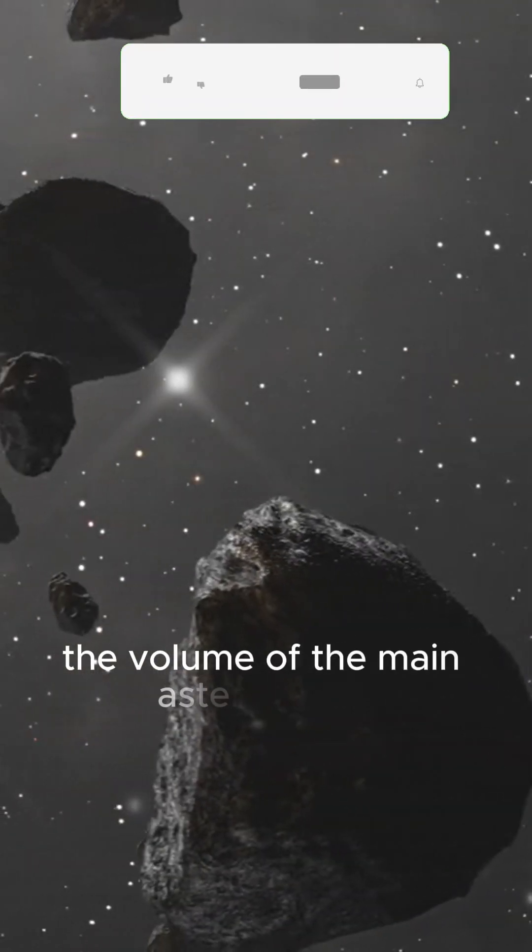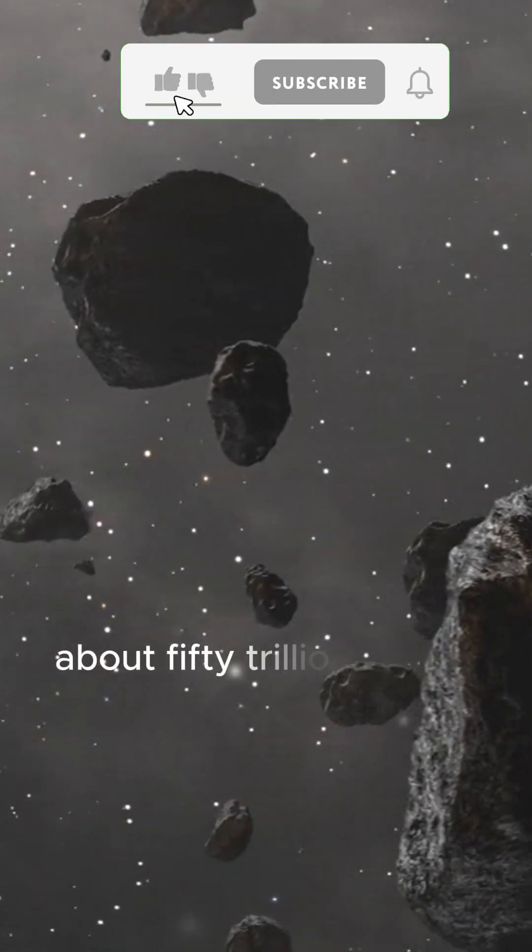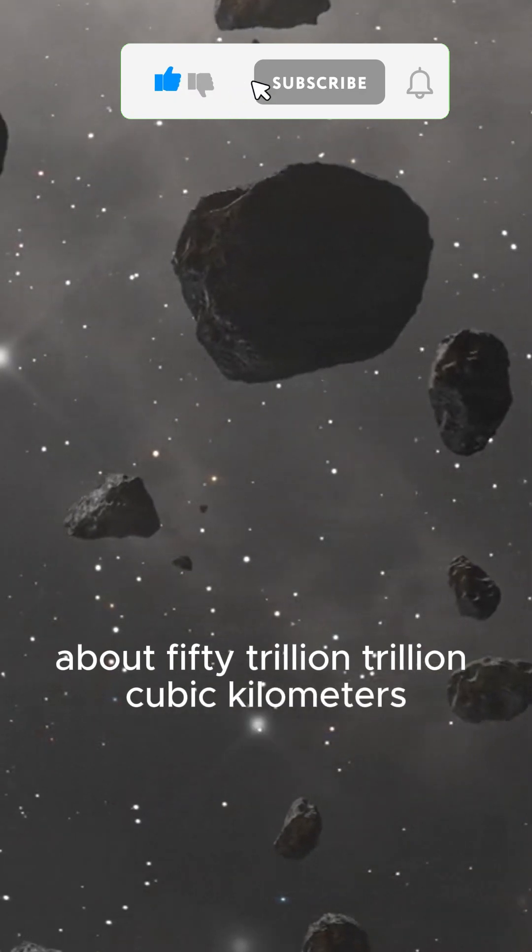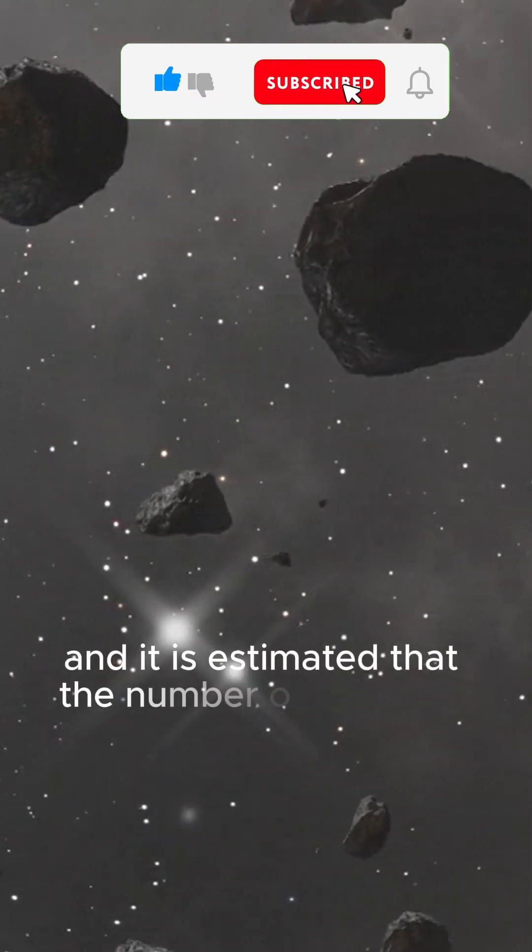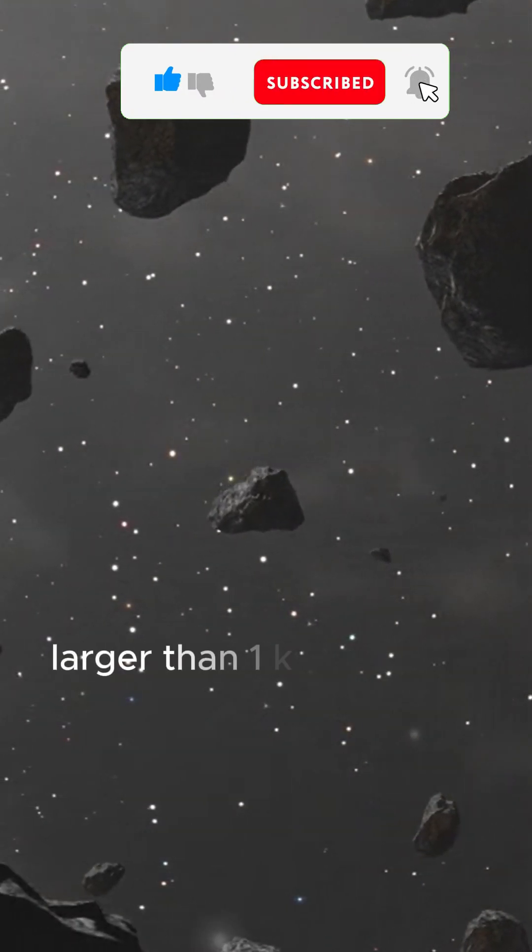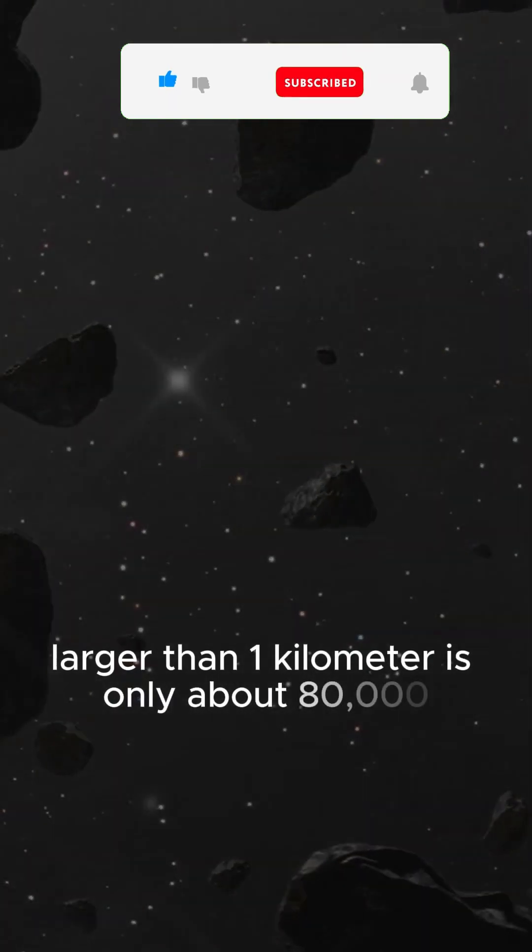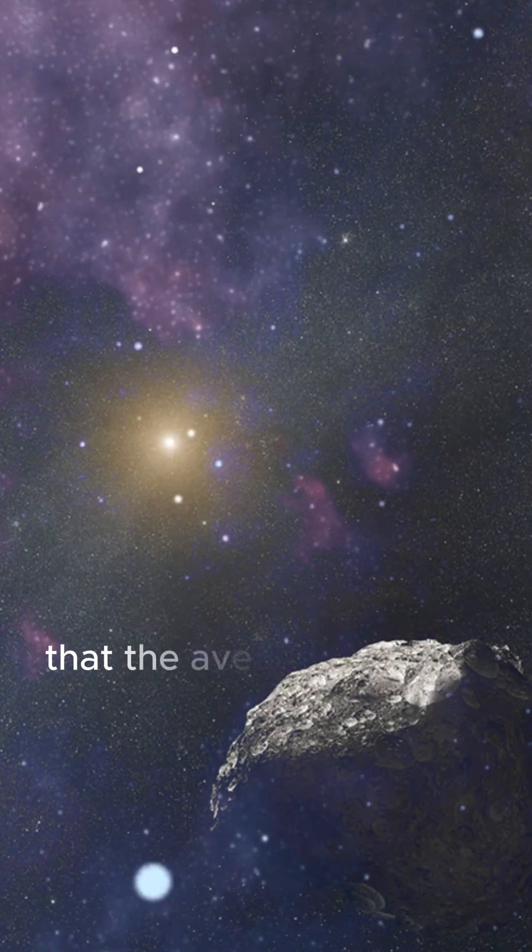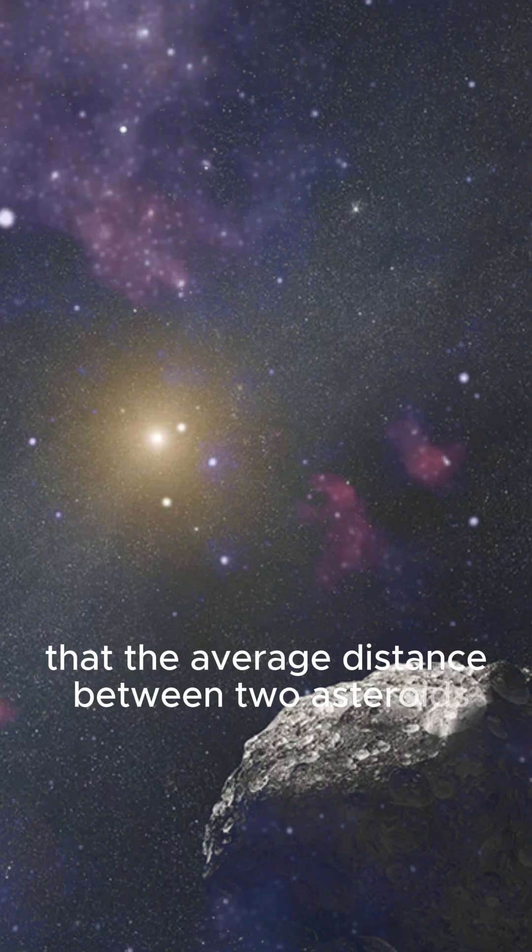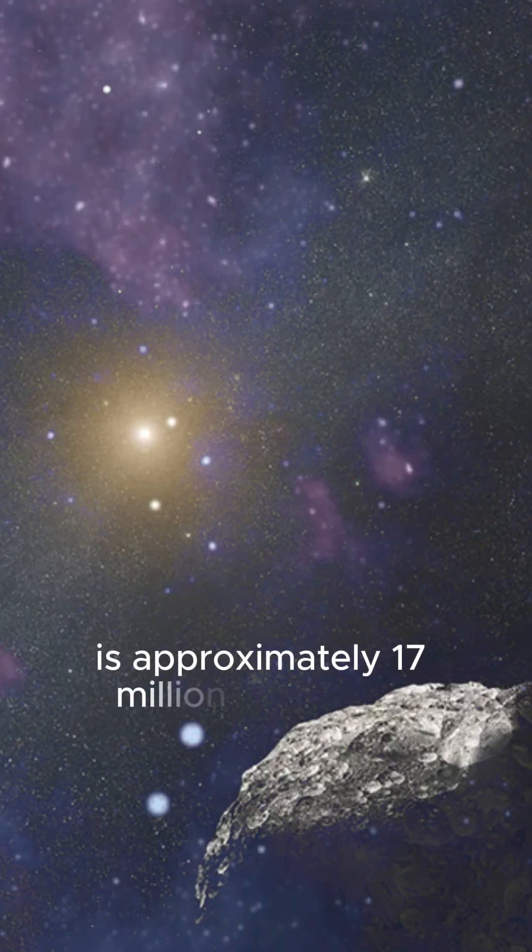The volume of the main asteroid belt is about 50 trillion trillion cubic kilometers, and it is estimated that the number of asteroids larger than one kilometer is only about 80,000. This means that the average distance between two asteroids is approximately 17 million kilometers.